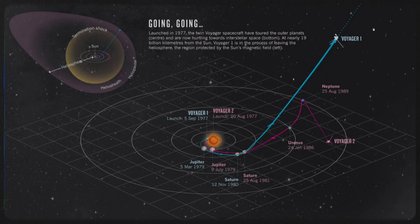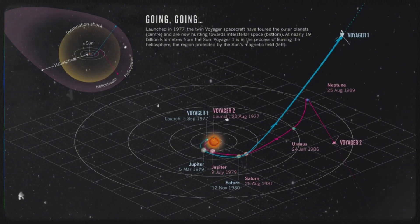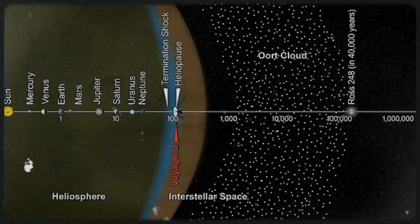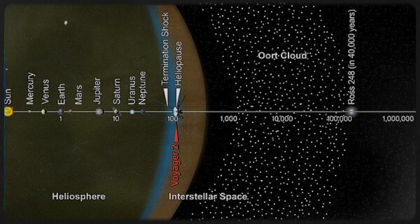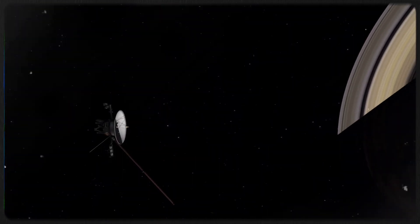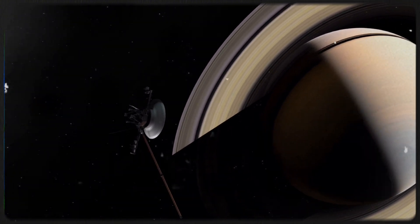Two of the most remarkable spacecraft ever launched might never have left the ground if not for a rare cosmic alignment. In this case, the four largest planets in our solar system provided the perfect opportunity.